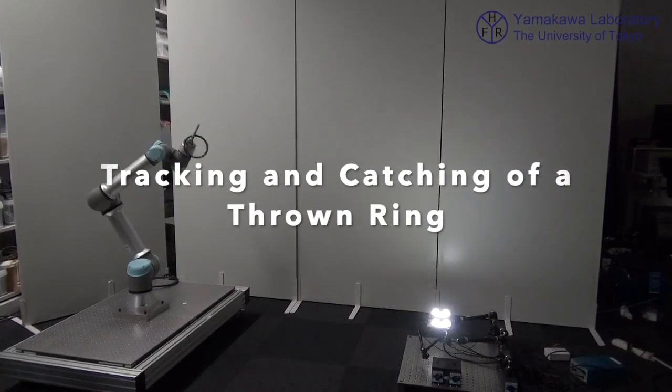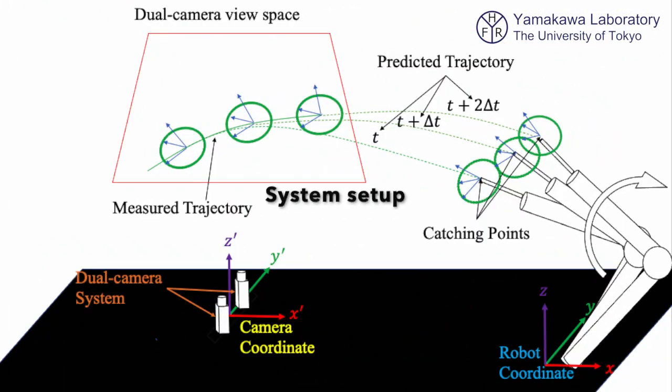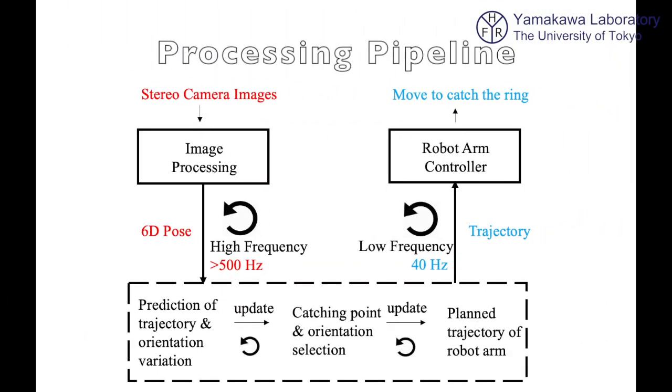This project is tracking and catching of a thrown ring using a general-purpose high-speed vision system and a collaborative robot. When the ring appears in the dual-camera view space, the image processing node will keep publishing the ring's position and orientation information with a frequency of no less than 500 Hz.